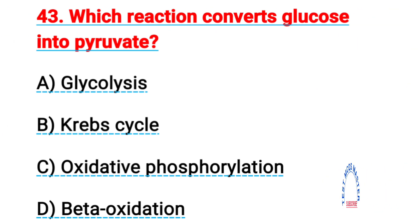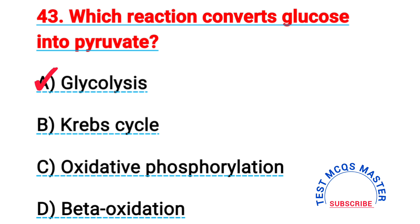Question number forty-three: which reaction converts glucose into pyruvate? The right answer is A, glycolysis.